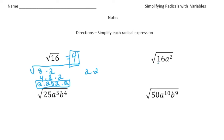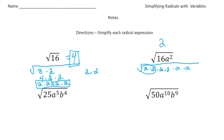Now I'm going to do the same thing over here where we have the square root of 16a squared. So 16a squared — 16 is going to be 2 times 2 times 2 times 2, because 2 times 2 times 2 times 2 is 16. And then a squared means a times a. Now we're looking for pairs: here's one pair, so I'm going to take out that one 2. Here's another pair, I'm going to take out another 2. And then here's a pair of a's, so I'm going to take out an a.